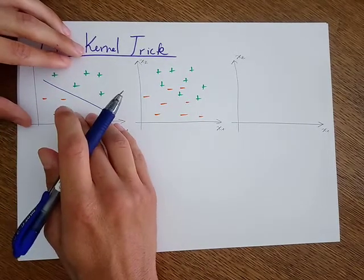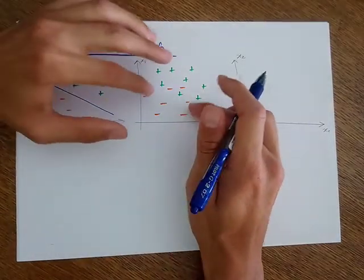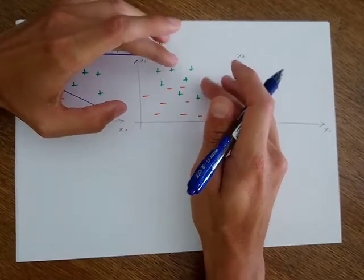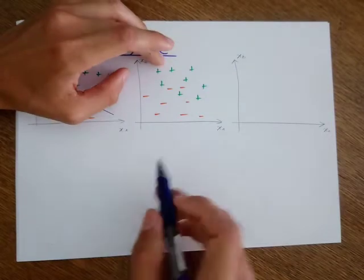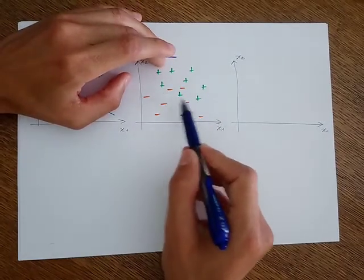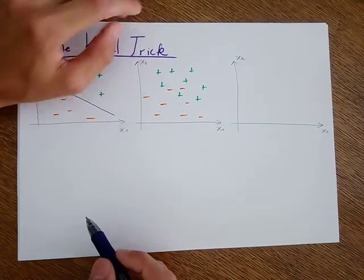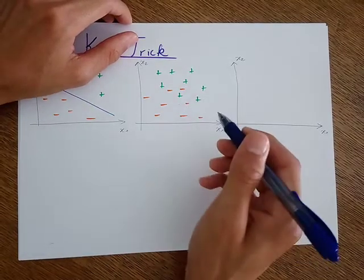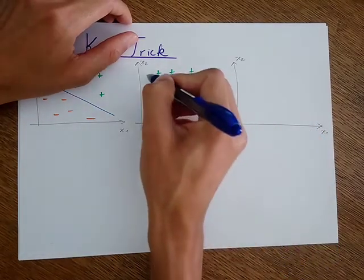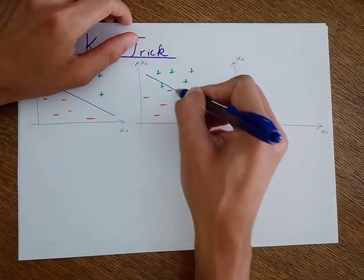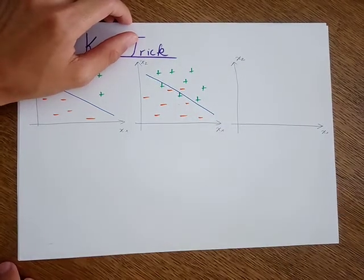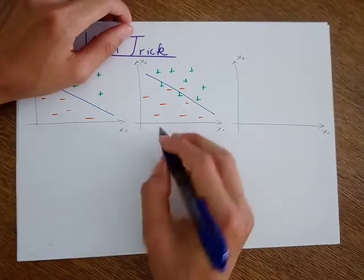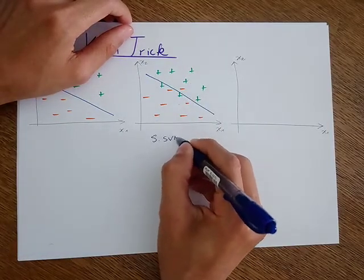However, there is a case when there is an overlap between the different samples of different classes, like in this case. So the data is not linearly separable. However, we can find a line that has a good trade-off and separate the data with the smallest number of mistakes. This is called the soft support vector machine.